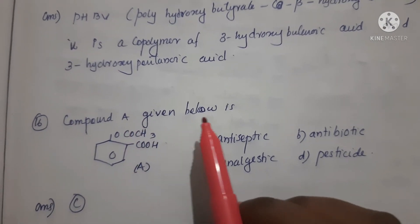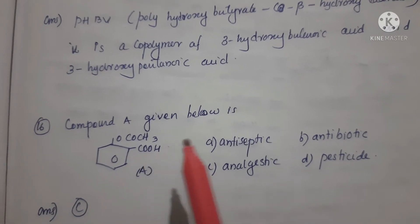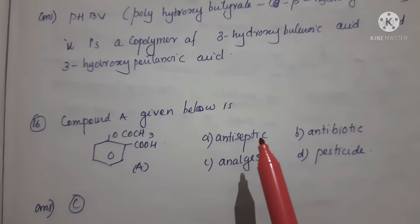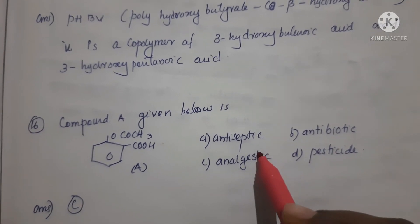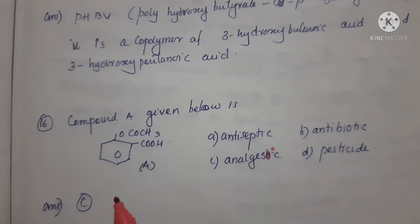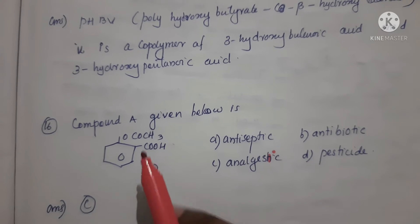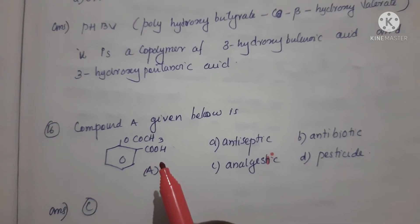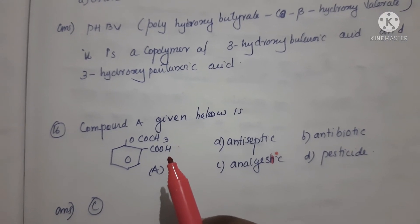Next question: the compound A given below is - compound A is given, and options are: A) antiseptic, B) antibiotic, C) analgesic, and D) pesticide. Correct answer is Option C, analgesic. The compound given is aspirin or acetyl salicylic acid.